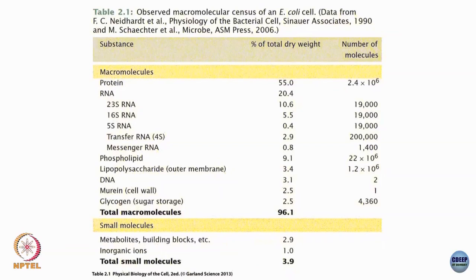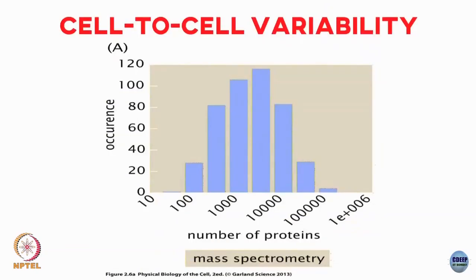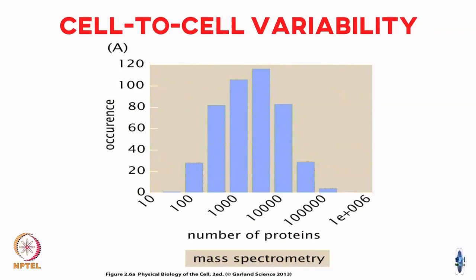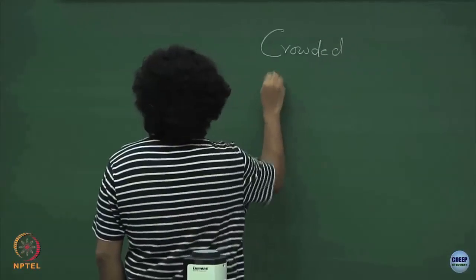Why did we do only a rule-of-thumb estimate? Because it does not make sense to do too accurate an estimate — these numbers are not set in stone; there is wide variability. If you look at a histogram of protein numbers across individual cells, you will see many cells with very few proteins and many cells with a large number. There is a huge variability, and this is a very generic feature: biological systems are extremely noisy — they are crowded and they are noisy.